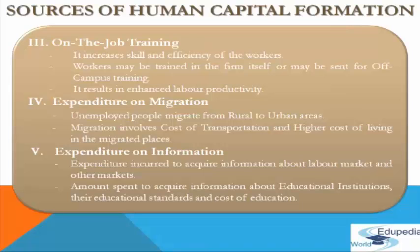The last source is expenditure on information. Expenditure is incurred to acquire information relating to labour markets and other markets. It involves amounts spent on seeking information about educational institutions, their educational standards and cost of education. For example, people want to know the level of salaries associated with various types of jobs, whether educational institutions provide the right type of employable skills and at what cost. Information is necessary to make decisions regarding investments in human capital as well as for efficient utilization of the acquired human capital stock.